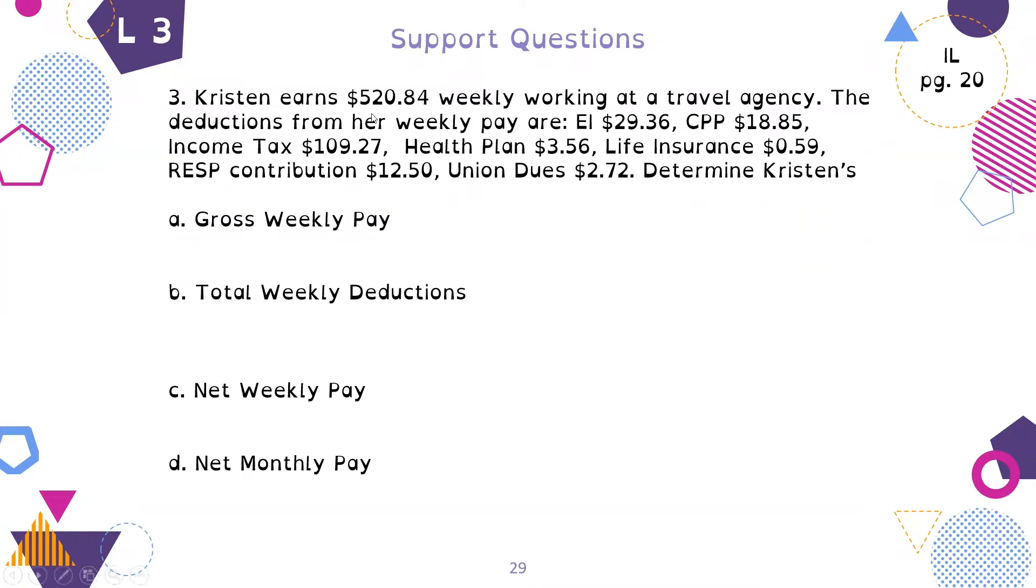Number three, Kristen earns $520.84 weekly working at a travel agency. The deductions from her weekly pay are EI $29.36, CPP $18.85, income tax $109.27, health plan $3.56, life insurance $59, RESP contribution $12.50, union dues $2.25. First determine Kristen's gross pay. Her gross weekly pay is $520.84. They just give it to us.